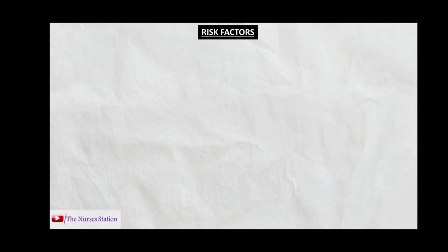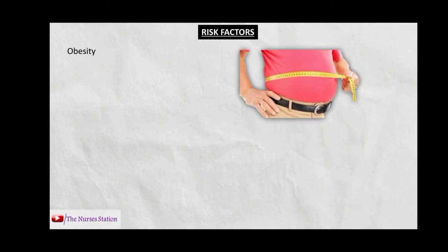The risk factors for obstructive sleep apnea include obesity, because obese patients have increased pharyngeal mass which increases the chances of collapsibility of the pharynx and can cause obstructive sleep apnea. Male gender is also a risk factor, because men are more prone to OSA due to extra deposition of body fat in the trunk, head, neck, and around the airways.